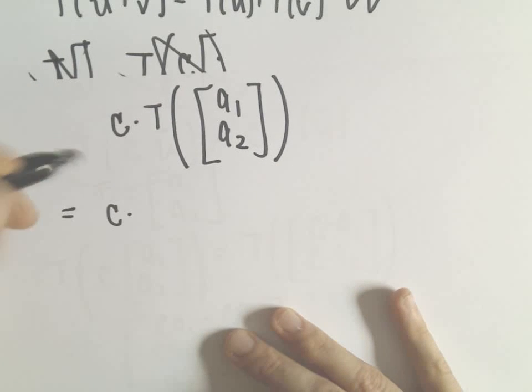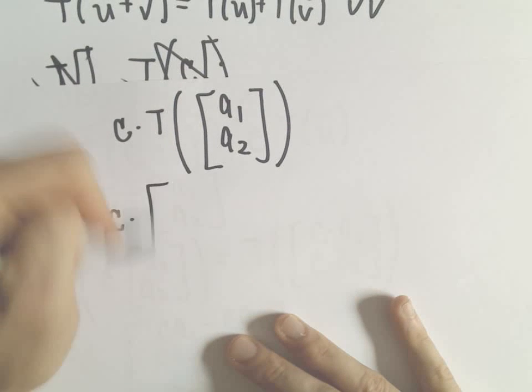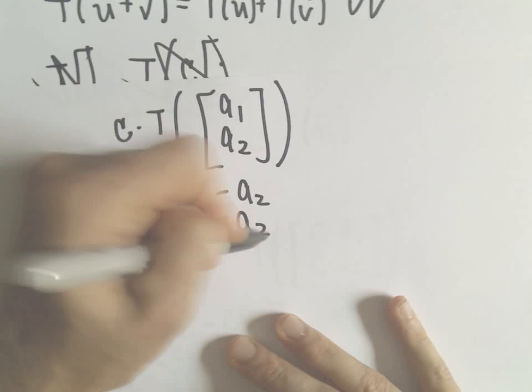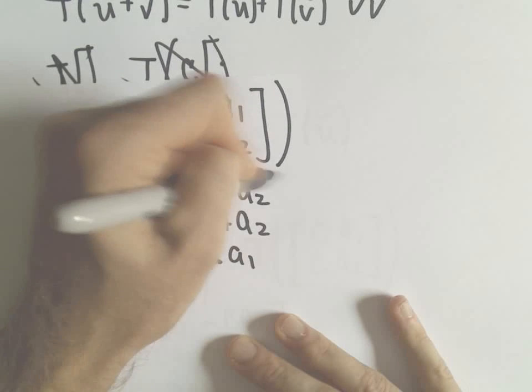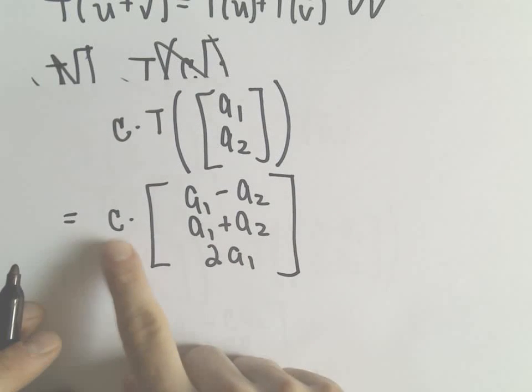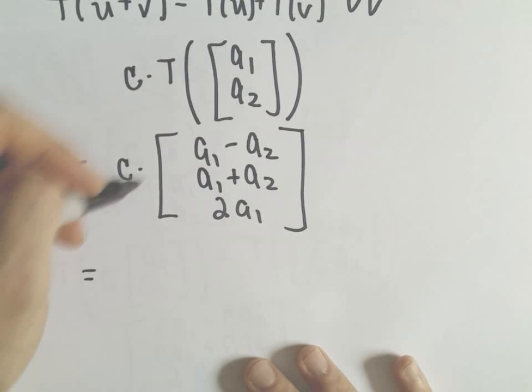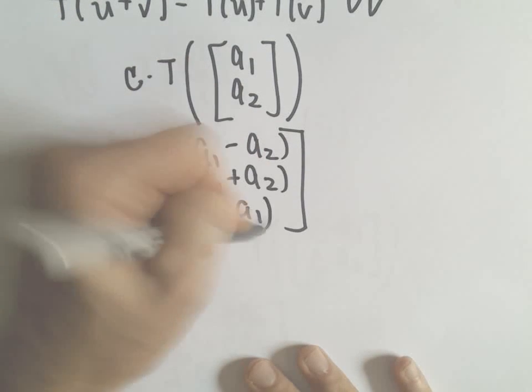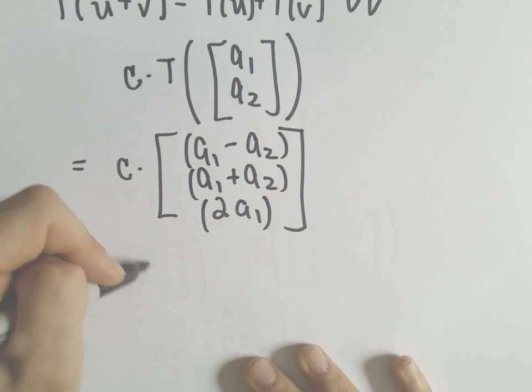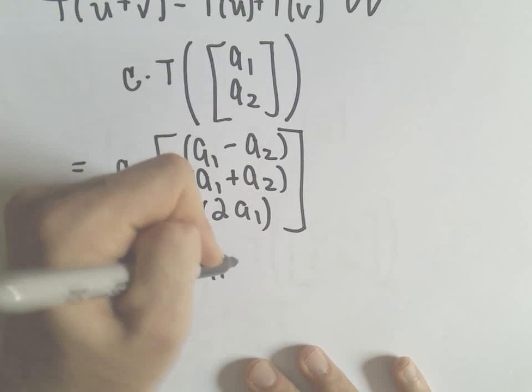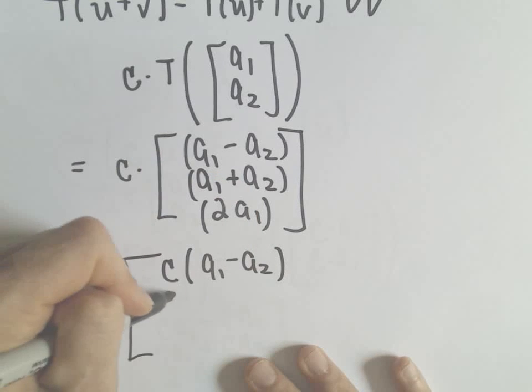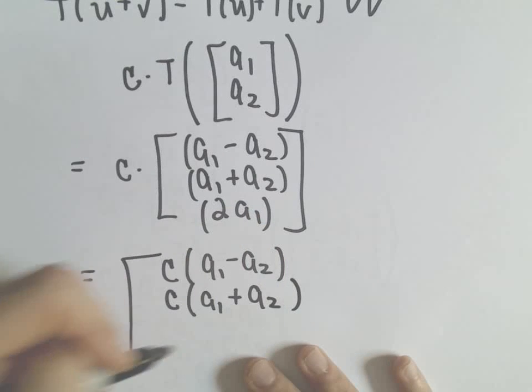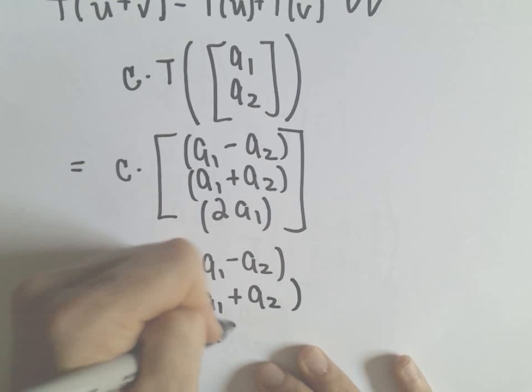Let's apply the transformation. It says we take the first minus the second, add them together, double the first one. Now I'm going to just multiply by the scalar. We just multiply each component, but be careful, you would have to distribute in all these cases. So we would have C times a1 minus a2, C times a1 plus a2, and then we would have C times 2 a sub 1.